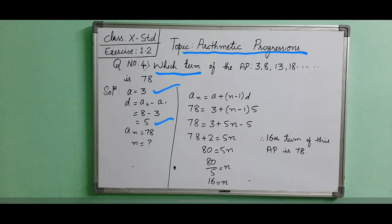5. If you see the difference, 8 minus 3 is 5, 13 minus 8 is 5, 18 minus 13 is 5. The difference is 5 and the nth term an is given as 78. We have the formula here: an equals a plus n minus 1 into d.